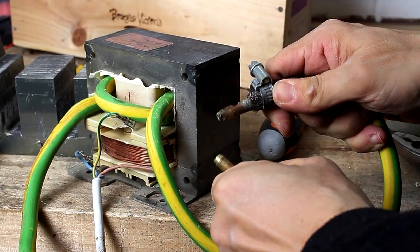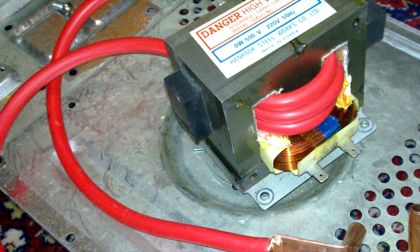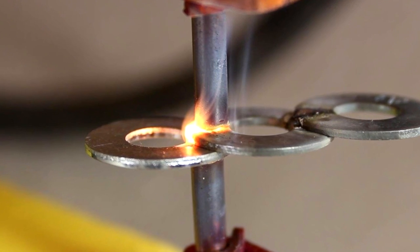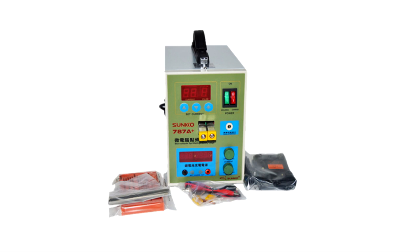We all saw contact welding machines, a huge transformer with coils of thick wire in the secondary winding, to get currents of a couple hundred and even thousands of amperes. And this is a Chinese device for battery welding, with a current of up to 500 amps and costing several hundred dollars.